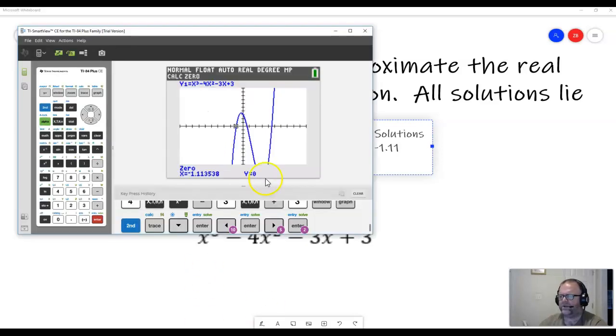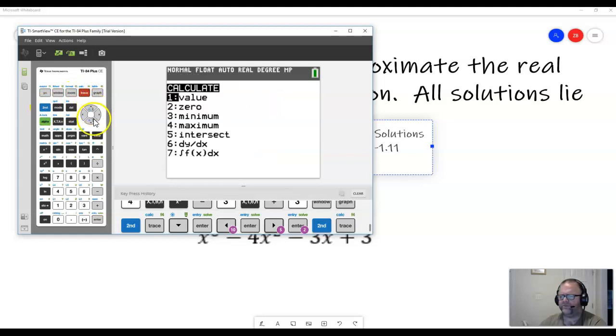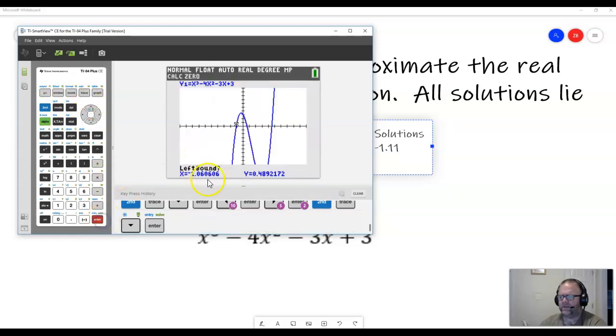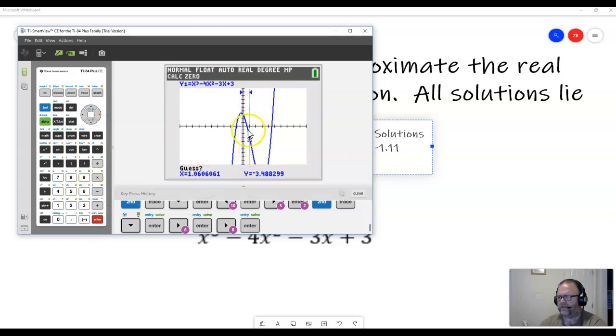Go back to the calculator. And we're going to do the same thing for these other two solutions. So I'm going to go ahead and hit second calculate. Go to zero. And it's asking me for the left bound again. So now I'm just going to make sure that I'm on the left side of this zero, this solution. So I can, that's fine. And then I go over to the right. Make sure I cross over it. Hit enter again. Now you can see that this is the only solution between these two vertical lines. And I hit enter.